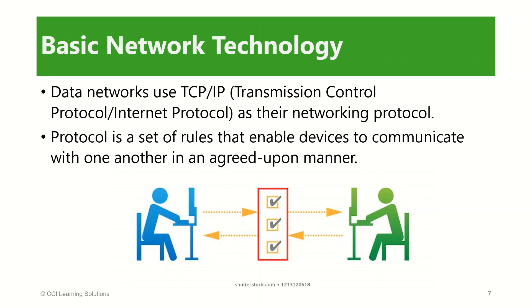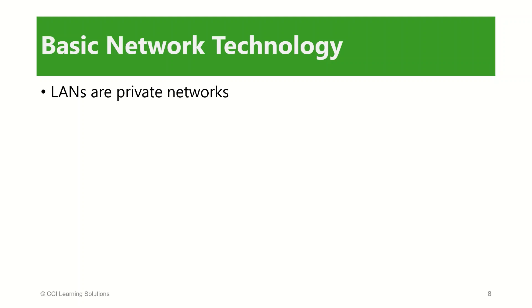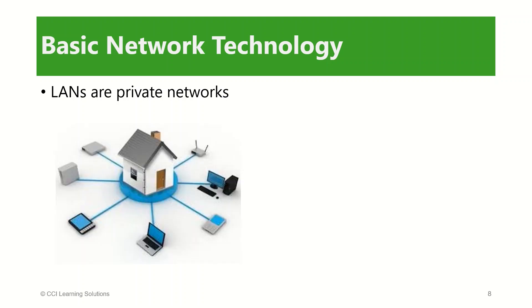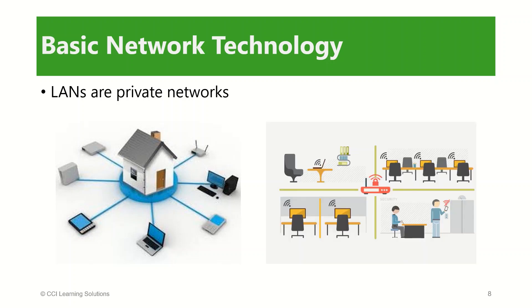There are two basic types of networks relevant to our discussion: local area network and wide area network. A local area network, or LAN, is a private local setup. Your home network, small office, or school network is a LAN. LANs are private networks and generally confined to one geographic location.